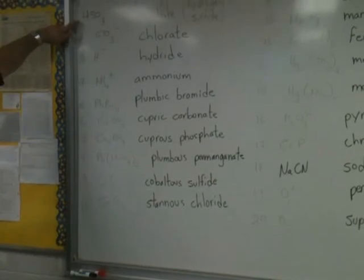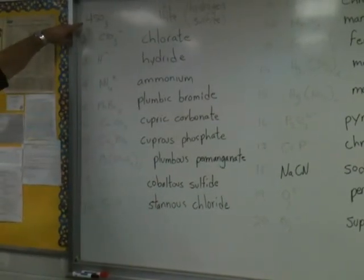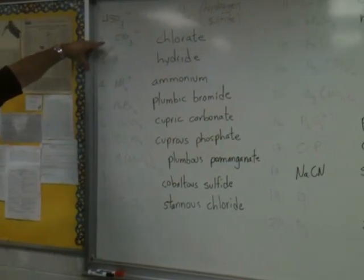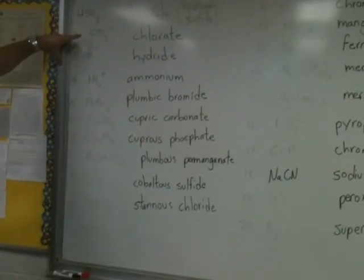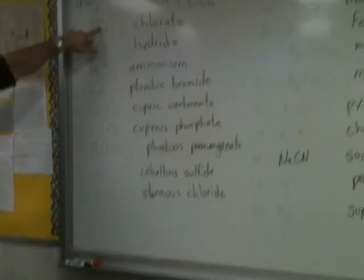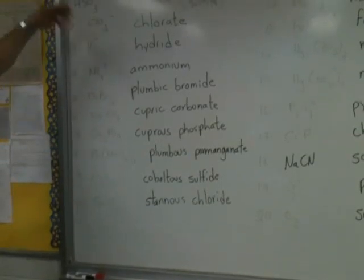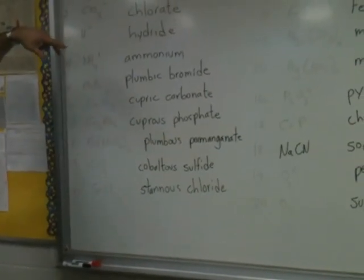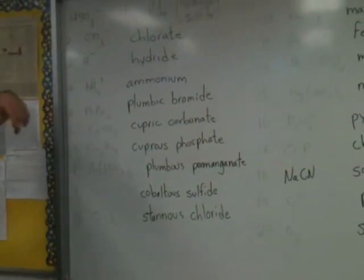The other ones are simply anions by themselves. So this is bisulfite, also known as hydrogen sulfite. This is chlorate. This series of ions has the full possible number of oxidation states for chlorine. So you can get ClO4⁻, which is perchlorate; ClO2⁻, which is chlorite; and ClO⁻, which is hypochlorite.